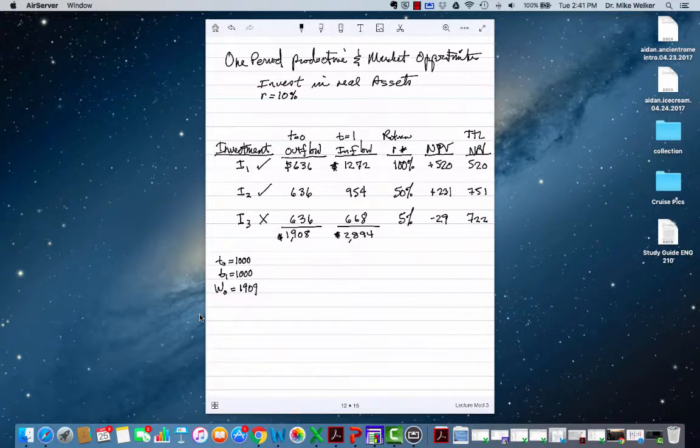I would reject the third project because it's going to be wealth diminishing. The internal rate of return r star is less than the market rate of return. You'd be better off investing in the market rather than in the project.